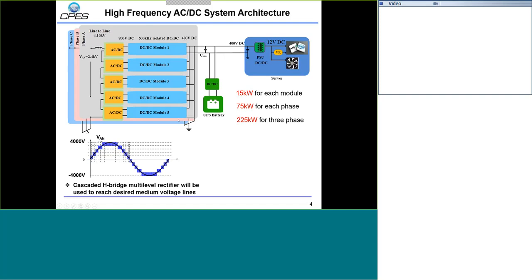The key design challenge in this whole system is the DC-DC module. For the AC-DC stage, it's an H-bridge with no transformer involved. But for the DC-DC stage, there will be a transformer to provide isolation between the high-voltage and low-voltage sides. To reduce the size of this DC-DC module, we have to go to higher frequency to reduce the transformer size.